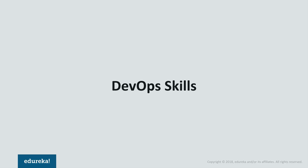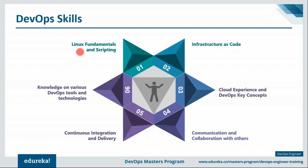Let's focus on various DevOps skills. A DevOps engineer should be proficient with Linux and should understand at least one scripting language. He should understand the concept of infrastructure as code, which we'll discuss shortly. Cloud experience is a must, and DevOps key concepts are very important. Communication and collaboration with others is also very important. He should have experience in building continuous integration and delivery pipelines.